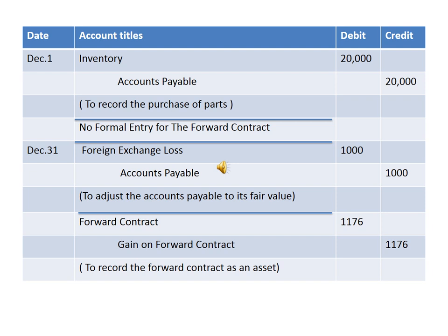By the end of the year, we need to record the foreign exchange loss and the gain on the forward contract. So we need to record two entries in our journal: the first related to accounts payable, and the second related to the forward contract.